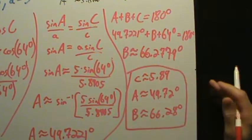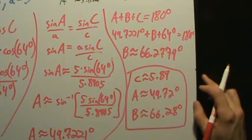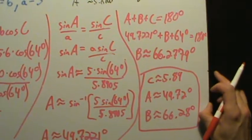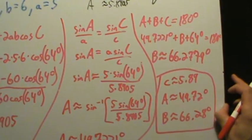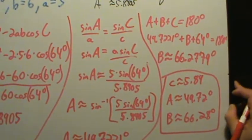Let's summarize the answers rounded to two decimals: little c ≈ 5.89, capital A ≈ 49.72°, and capital B ≈ 66.28°. Those are our answers rounded to the nearest hundredth — that's example one of using the law of cosines.